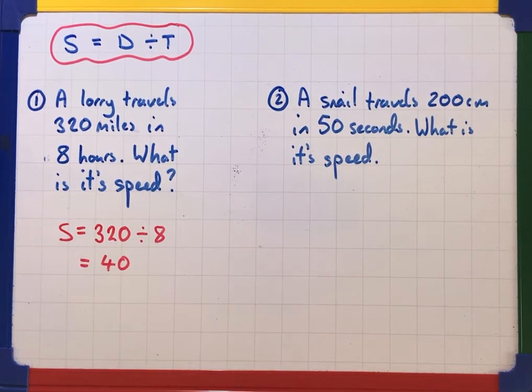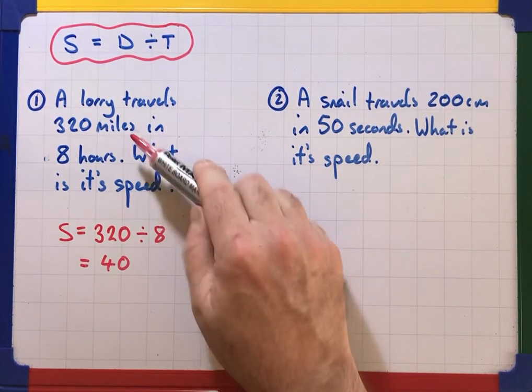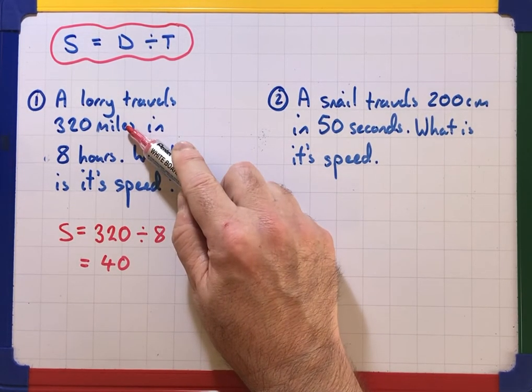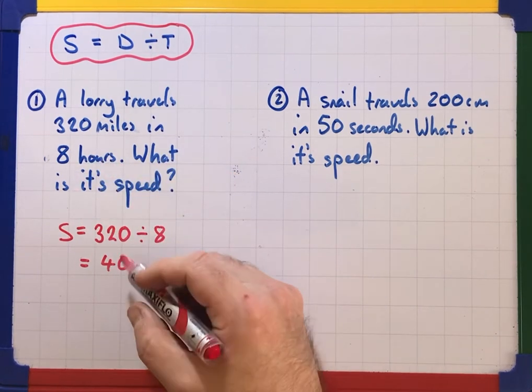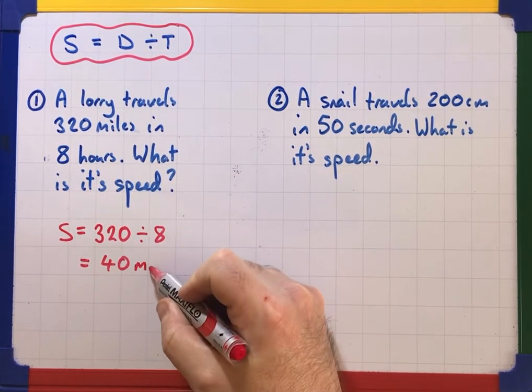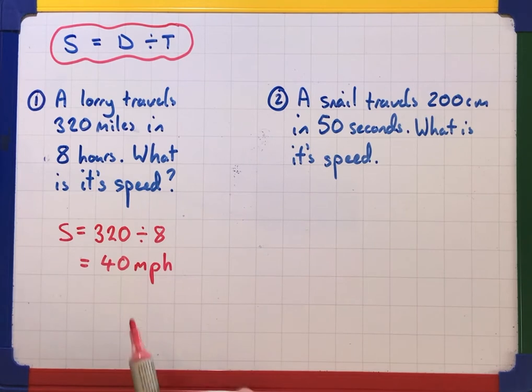Again happy for you to use a calculator if you want. Now we need to be careful about our units here we're dealing in miles and hours. So miles per hour. So we put MPH that stands for miles per hour and that would be the speed of this lorry.